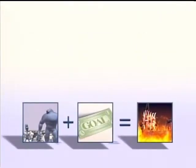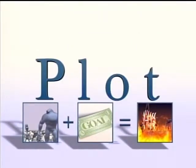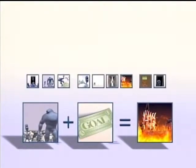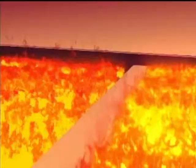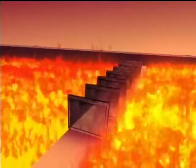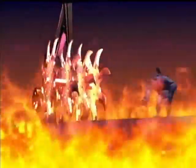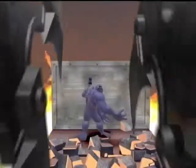Once you have developed your through line, it acts as a foundation for the rest of your plot. But plot is simply a way to organize the scenes in your visual story. Scenes are made up of three basic elements: characters, locations, and events. When your characters encounter an event or a series of events in a single location, it adds up to an entire scene.